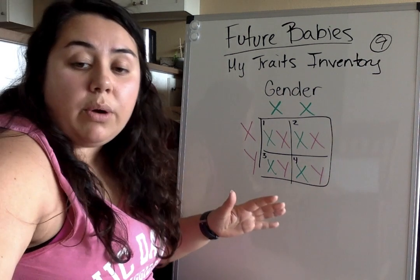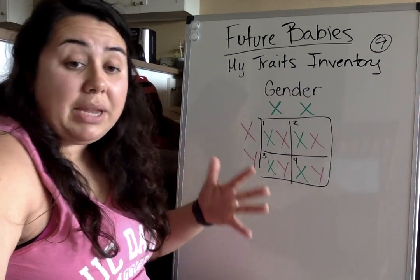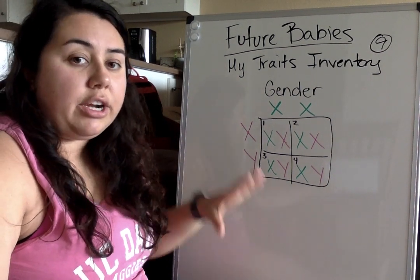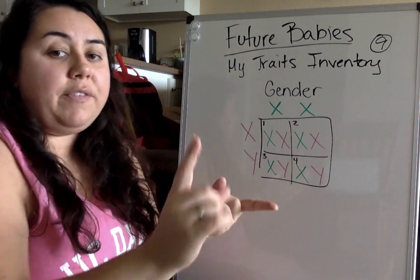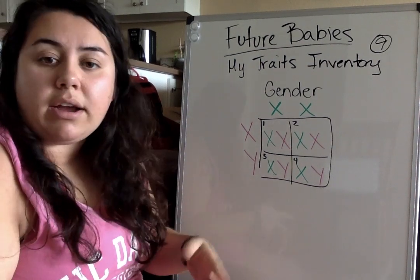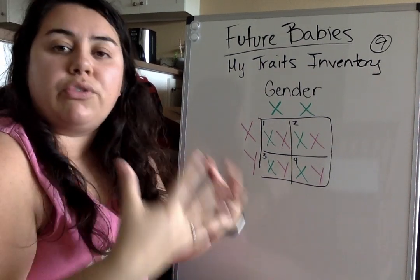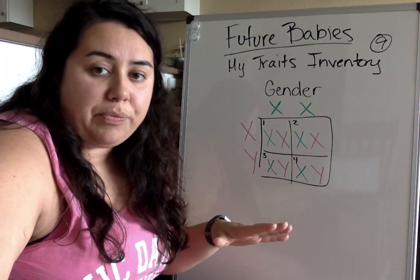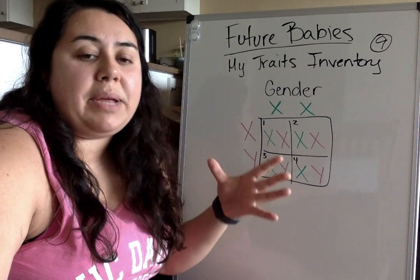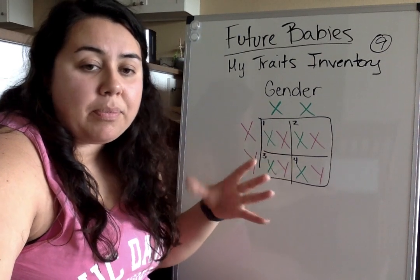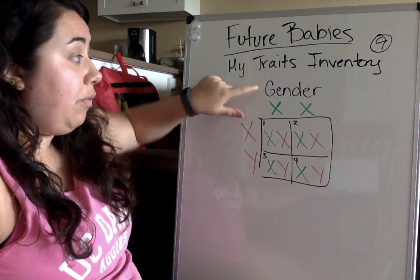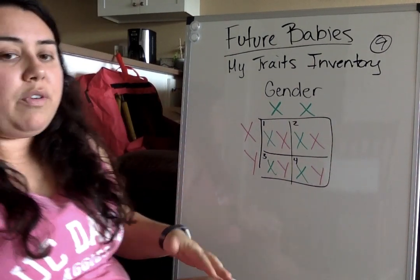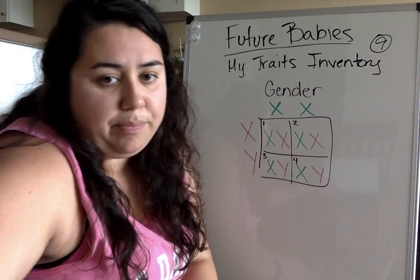Now you are going to repeat this for all of the traits — face shape, hair type, dimples, freckles, all of those — on a piece of paper. Don't forget to label them. Once you've done that, you can move on to part two.